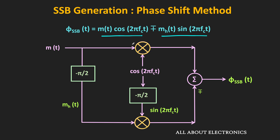Using the adder circuit, if we add these two signals, we get the lower sideband. On the other hand, if we subtract the second term from the first term, we get the upper sideband signal. So with the help of two balanced modulators and the Hilbert transform phase shifter, it is possible to generate the SSB signal.